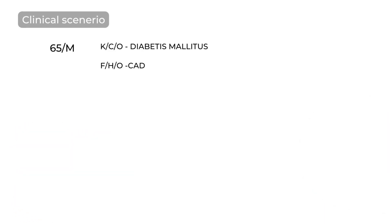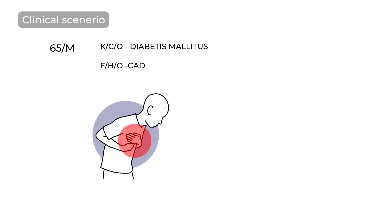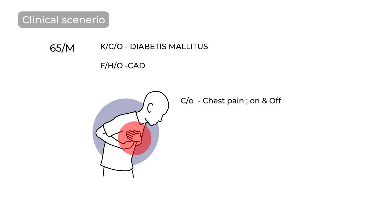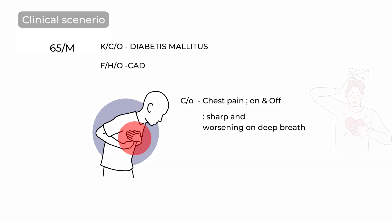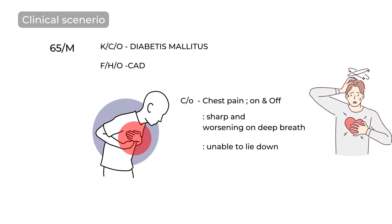This case involves a 65-year-old gentleman who is diabetic and has a family history of coronary artery disease. He comes to you in the emergency room complaining of chest pain that has been going on and off for the last three days. When asked to describe the character of the chest pain, he said it was very sharp and worsened when he took a deep breath. He is also unable to lie down because of the pain. On probing further, you find that he had some kind of viral fever or flu-like illness about five days ago, but that seems to be improving now.